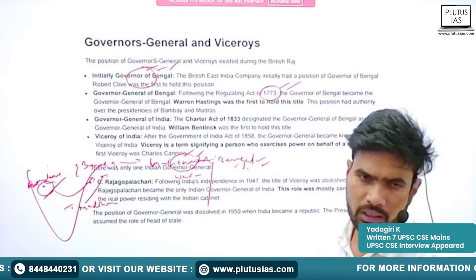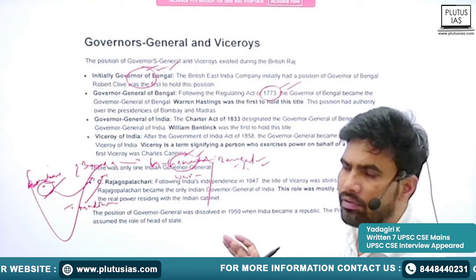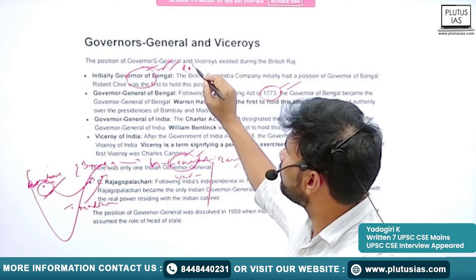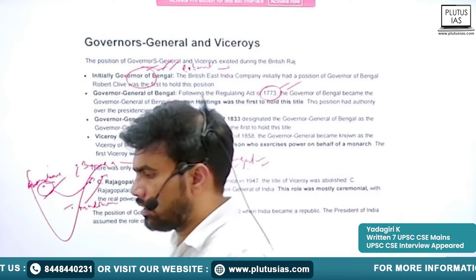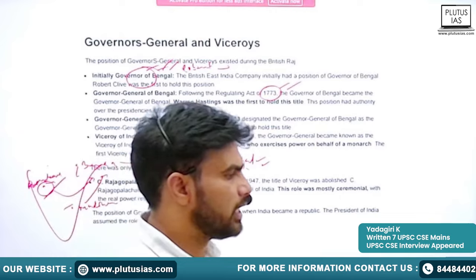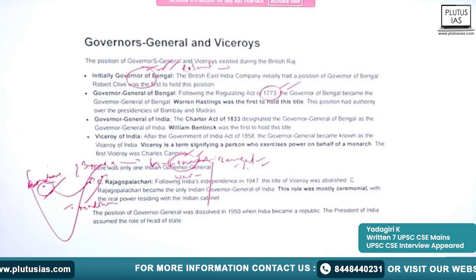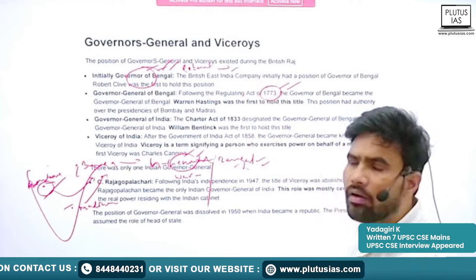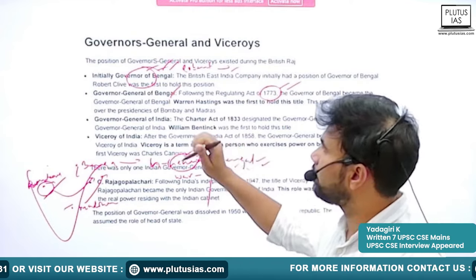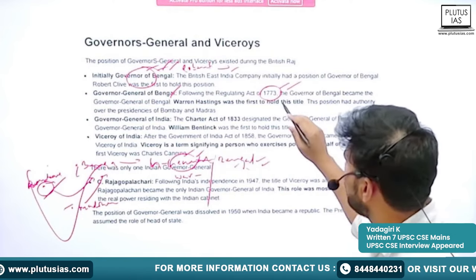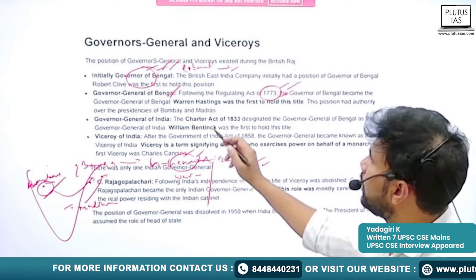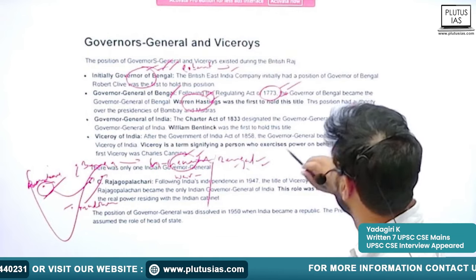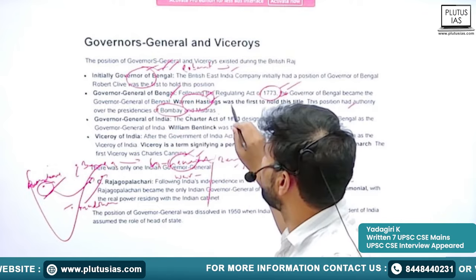Some prominent Governors General of Bengal are there which we will study. Initially, Robert Clive was the prominent Governor of Bengal — well associated with the Battle of Plassey, which laid the actual foundation for the beginning of colonial rule. After that, with the Regulating Act of 1773, Warren Hastings became the first Governor General of Bengal, holding some authority over the presidencies of Bombay and Madras.